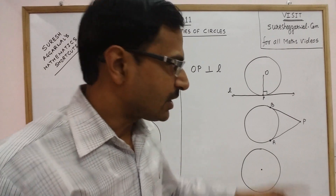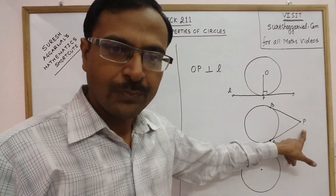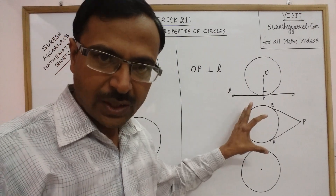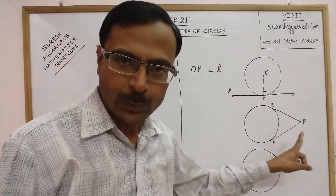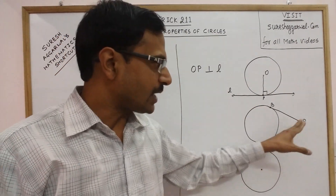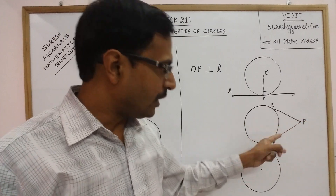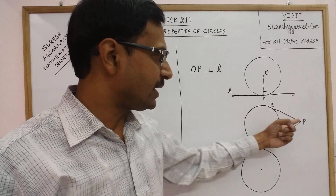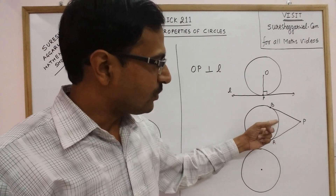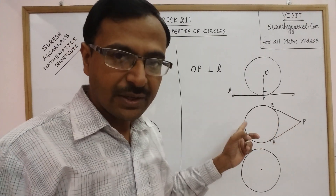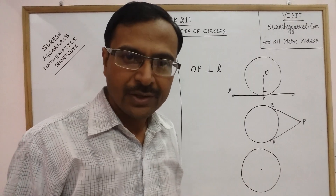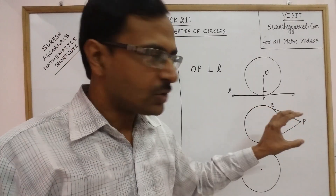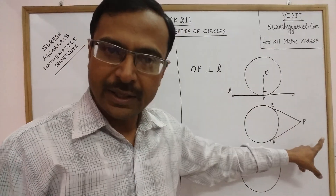From an external point you can draw only two tangents to a circle. I cannot draw a third tangent from this point P — either I can go down or up. I cannot come in the middle because in that case the line would cross the circle and touch it at more than one point. So only two tangents can be drawn to a circle from an exterior point.